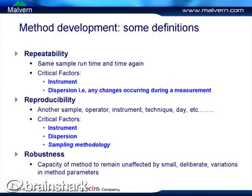Finally, we're looking at robustness, which involves deliberately altering the method parameters — making small changes to your method to test whether small variations have any effect on the result. So you're testing how sensitive the method is to slight variations.